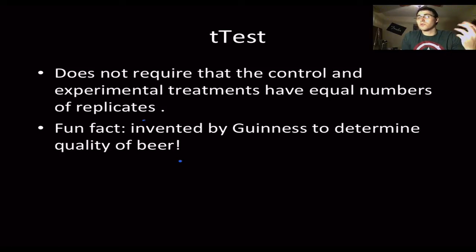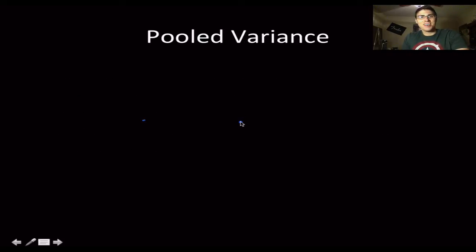All this will really make a lot more sense once we actually get down to doing the math behind it. So it does not require that the control and the experimental treatments have equal number of replicates. We're going to do an example where they don't really need to. And a fun fact: it was invented by Guinness to determine which beer had the highest quality. Oh, thank you, Guinness, for giving us this.